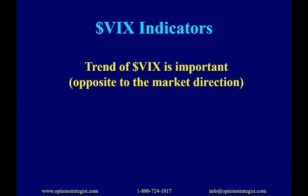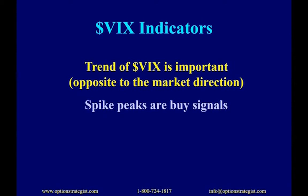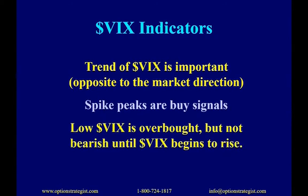Our fourth area is volatility, primarily the VIX created by the CBOE. VIX generally trends opposite to the market — when the market goes up, VIX goes down or sideways. When the market falls fast enough, VIX shoots up and creates a spike peak on its chart — those are buy signals. Conversely, when VIX is very low and muddling around, that's okay for stocks. When VIX finally establishes an uptrend from those low levels, that's your sell signal.